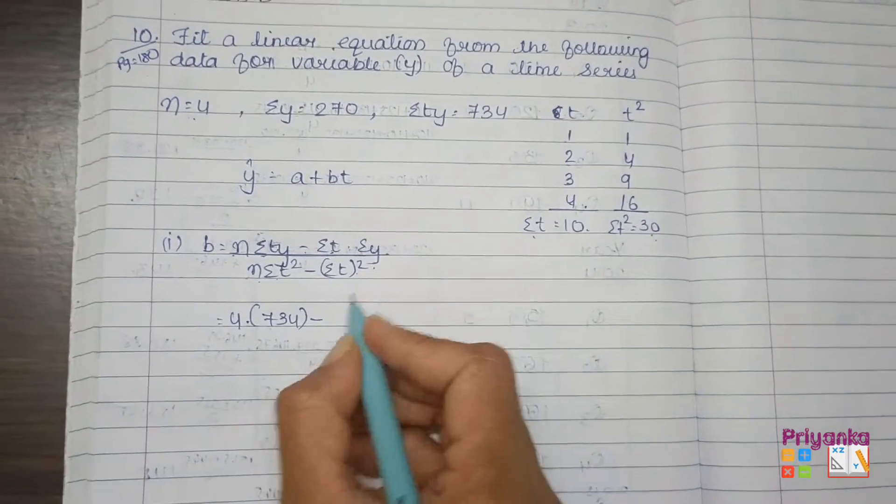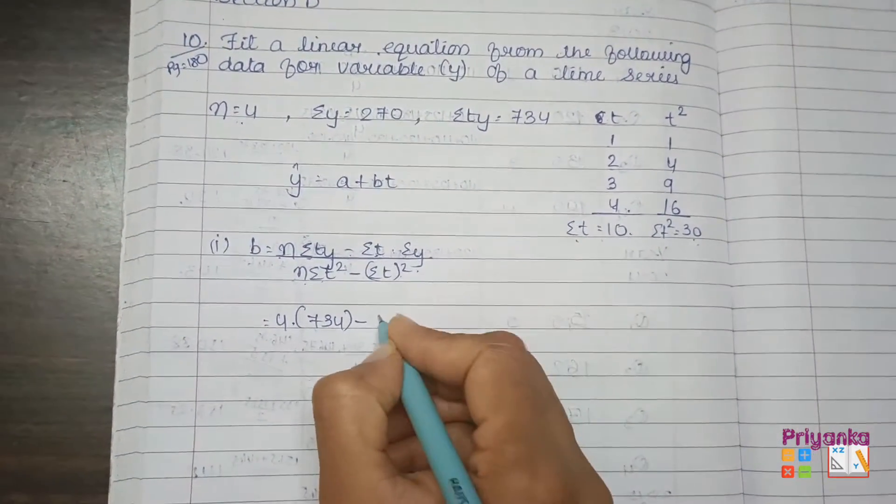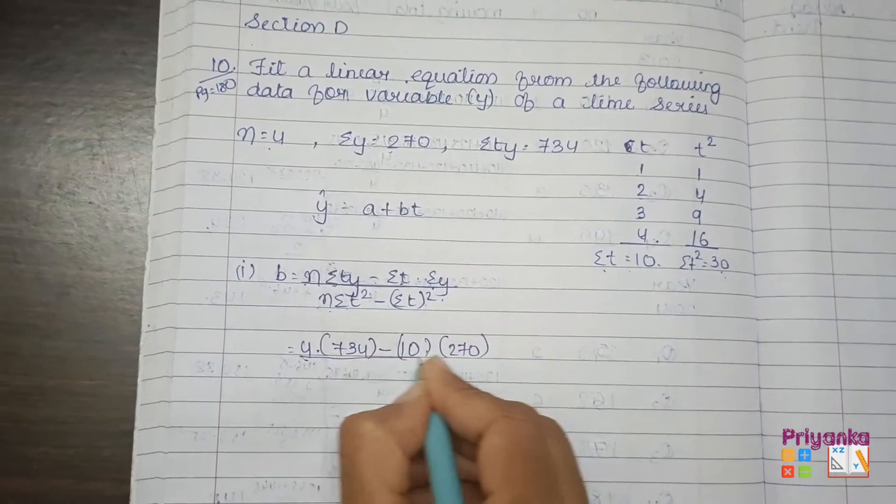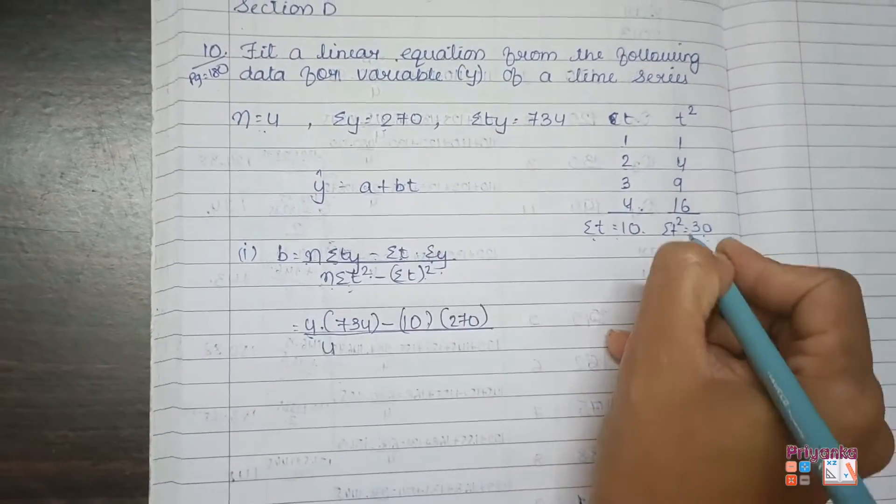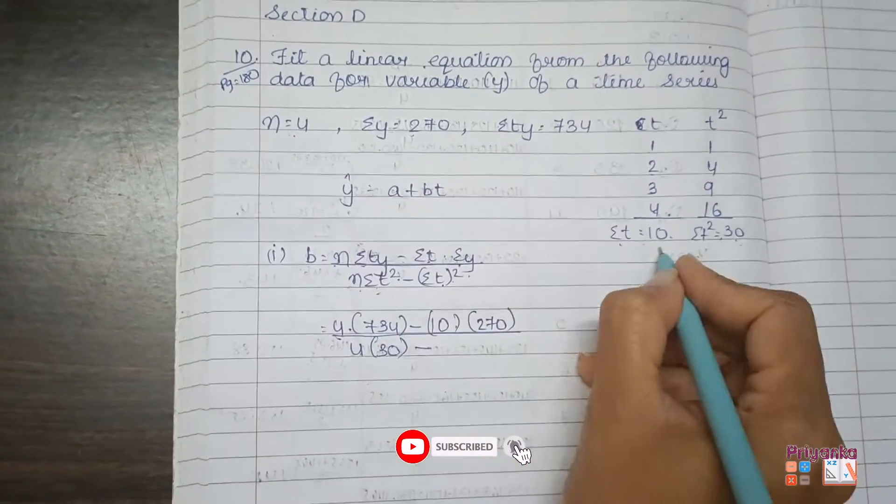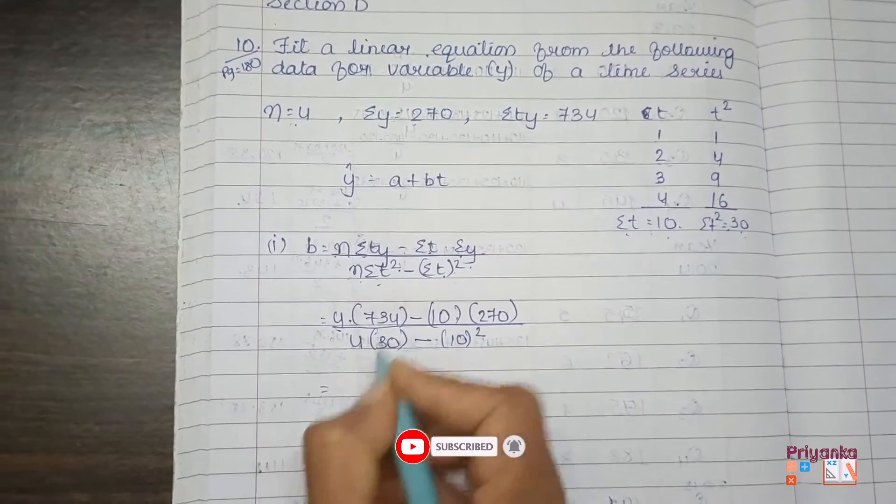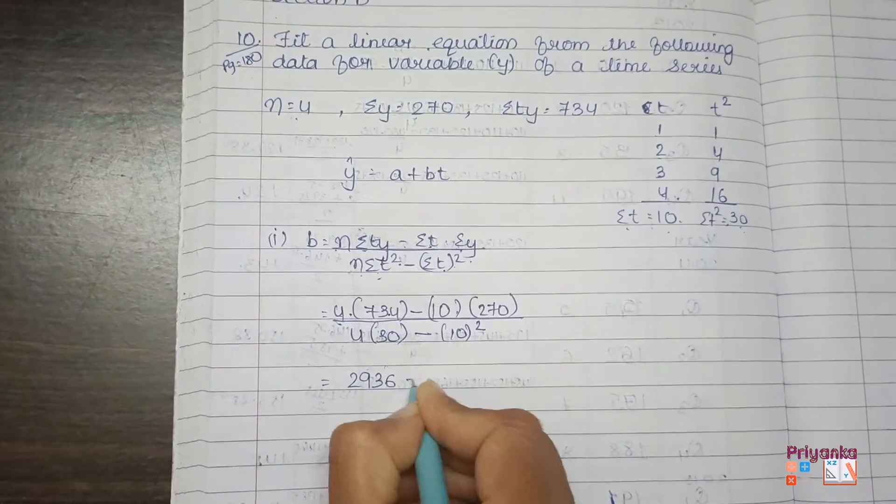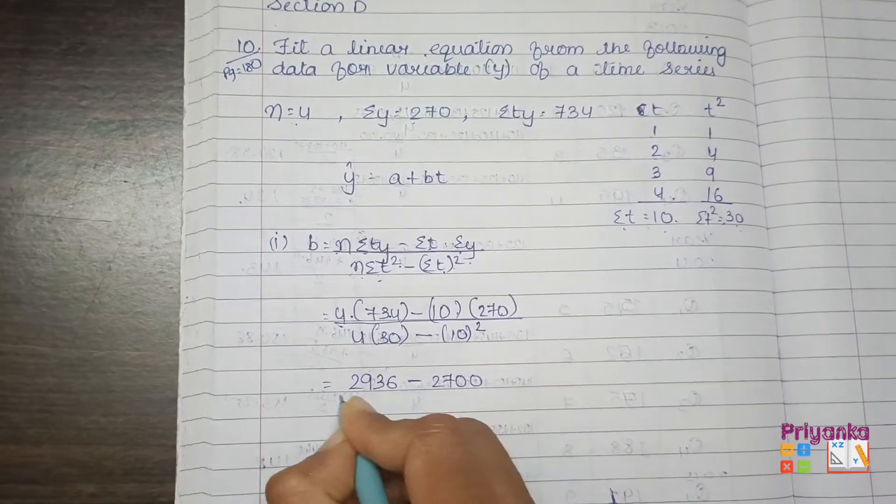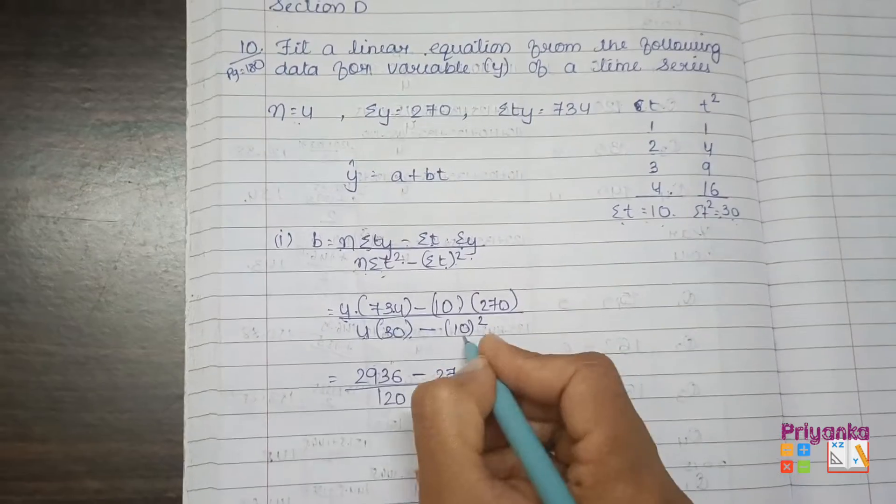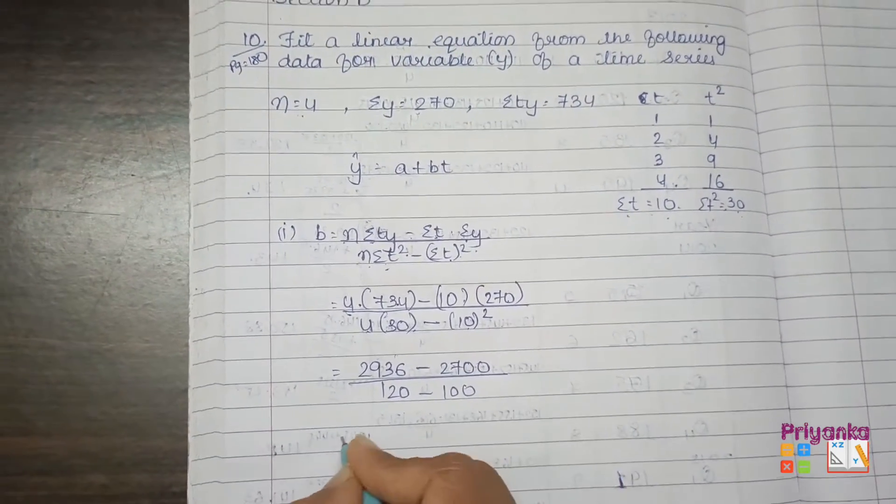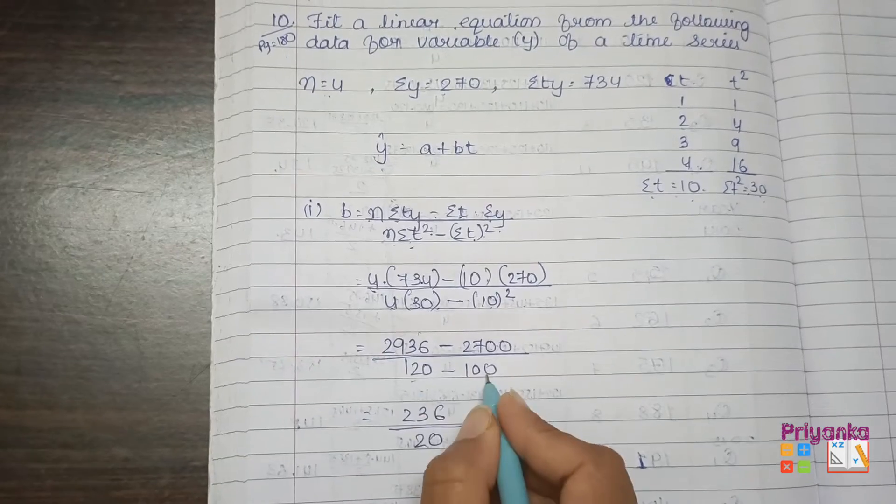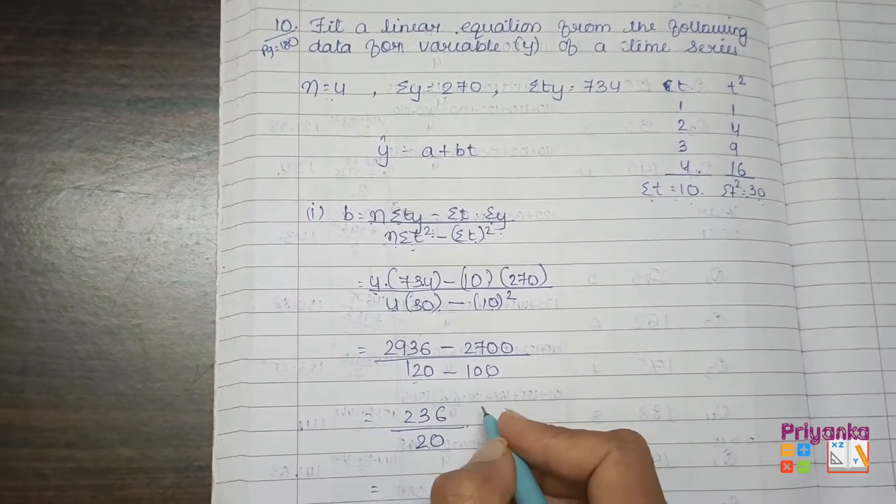So now let's put them into the formula: 4 into 734 minus sigma t 10 into sigma y 270, divided by 4 into 30 minus sigma t 10 whole square. Here we get 2936 minus 2700, that is 236, divided by 120 minus 100, that is 20. So we get the final answer 11.8 for b.